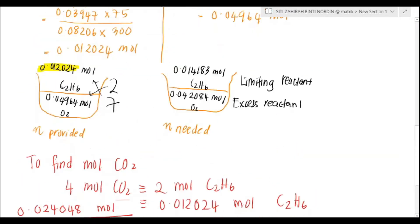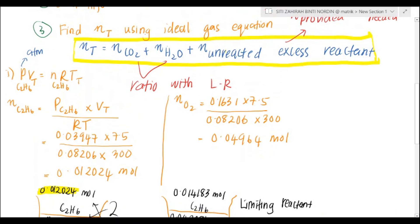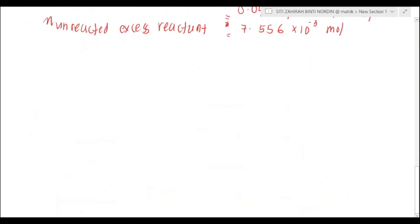You've got all the mols needed to find your mol total. Calculate your mol total. This is your mol of carbon dioxide plus the mol of water plus the mol of unreacted excess reactant, which is going to be 0.0676 mol. We are done to find our total mol.